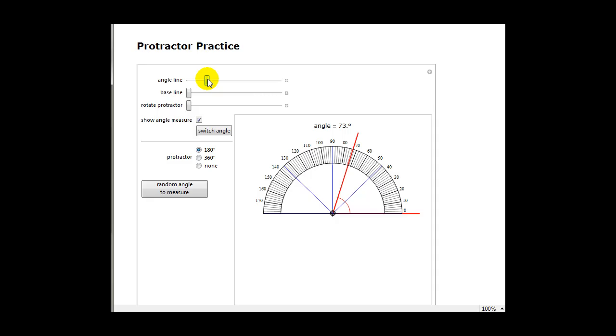For example, if we had an angle here between these two red rays, we can see that it measures seventy-three degrees by lining up the initial ray here and measuring from the terminal side.